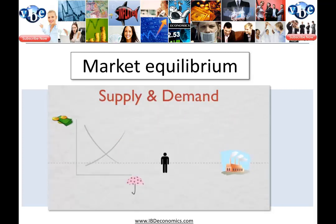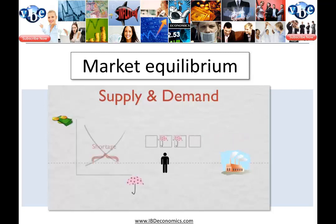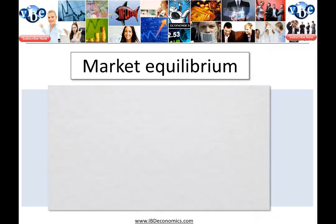What if the price of umbrellas is higher than the market clearing price? Then producers make more umbrellas than buyers are willing to buy at that price, and we have a surplus. Similarly, if the price of umbrellas is set below the market clearing price, buyers want to buy lots of umbrellas, but producers aren't so eager to produce that many. So we have a shortage of umbrellas.